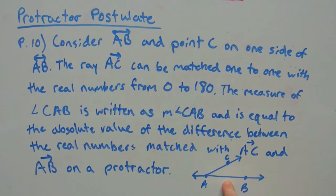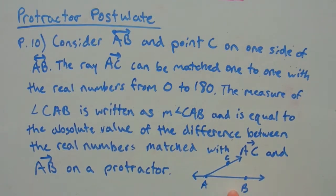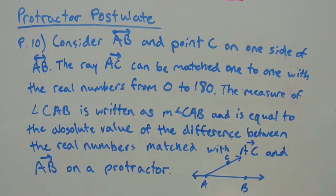Usually, we don't have to calculate the difference because we line one ray up with zero and then measure up from zero. So, that would give us the positive measurement of the angle.